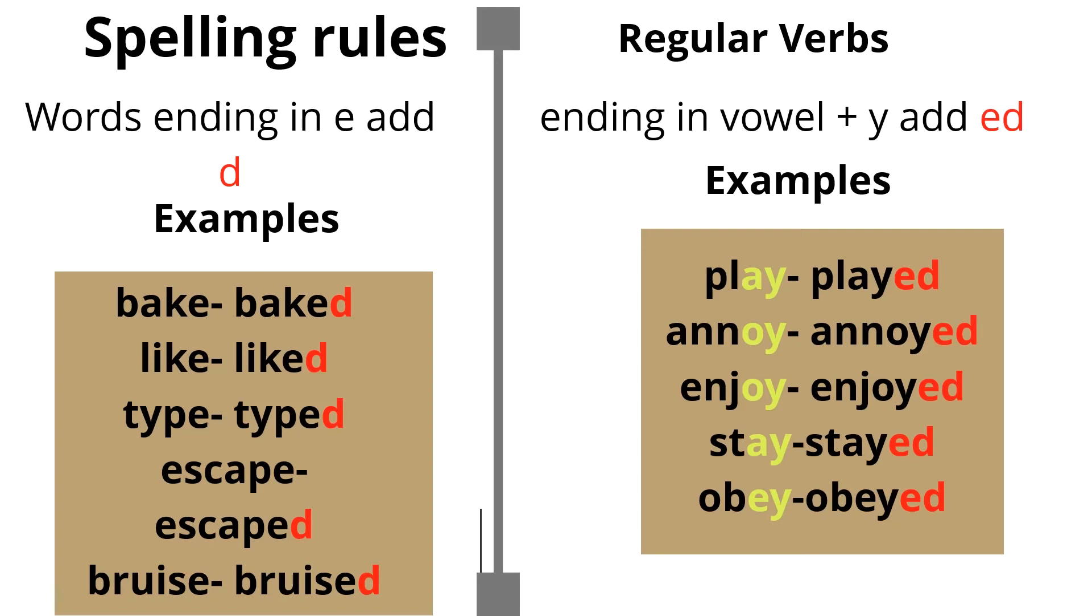Here are the spelling rules that we need to know for regular verbs. Words ending in E, we add D. For example, bake, baked. Like, liked. Type, typed. Escape, escaped. Bruise, bruised.